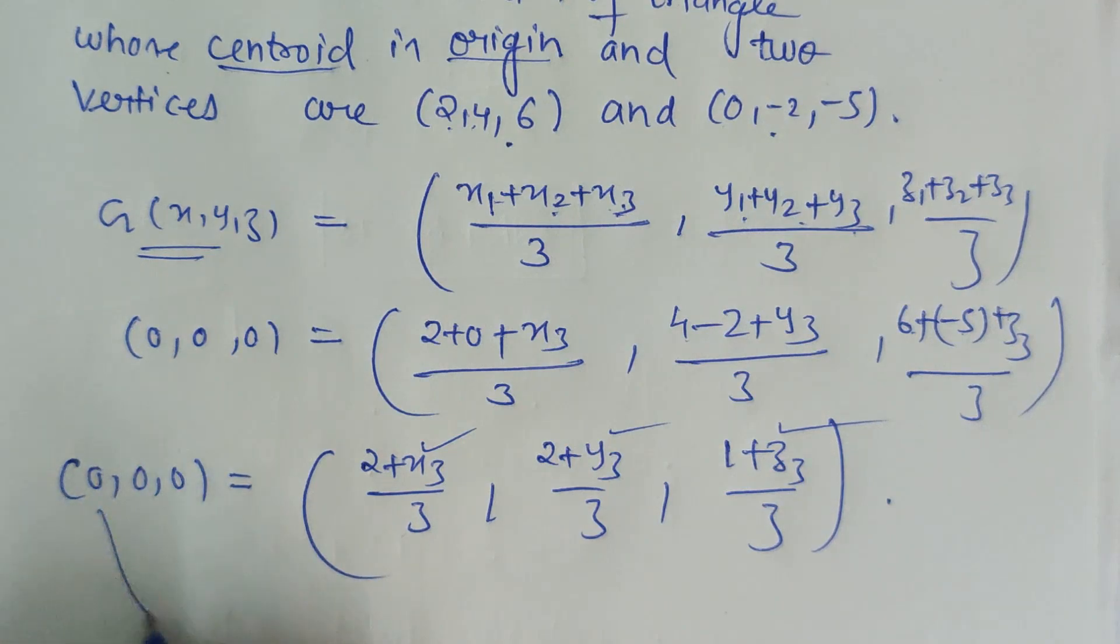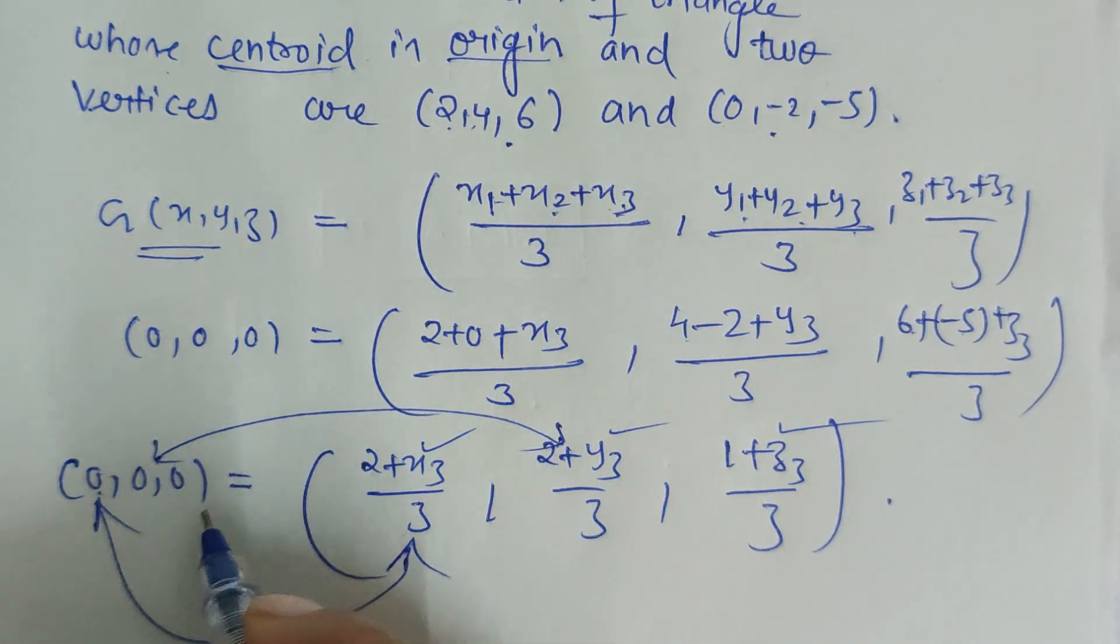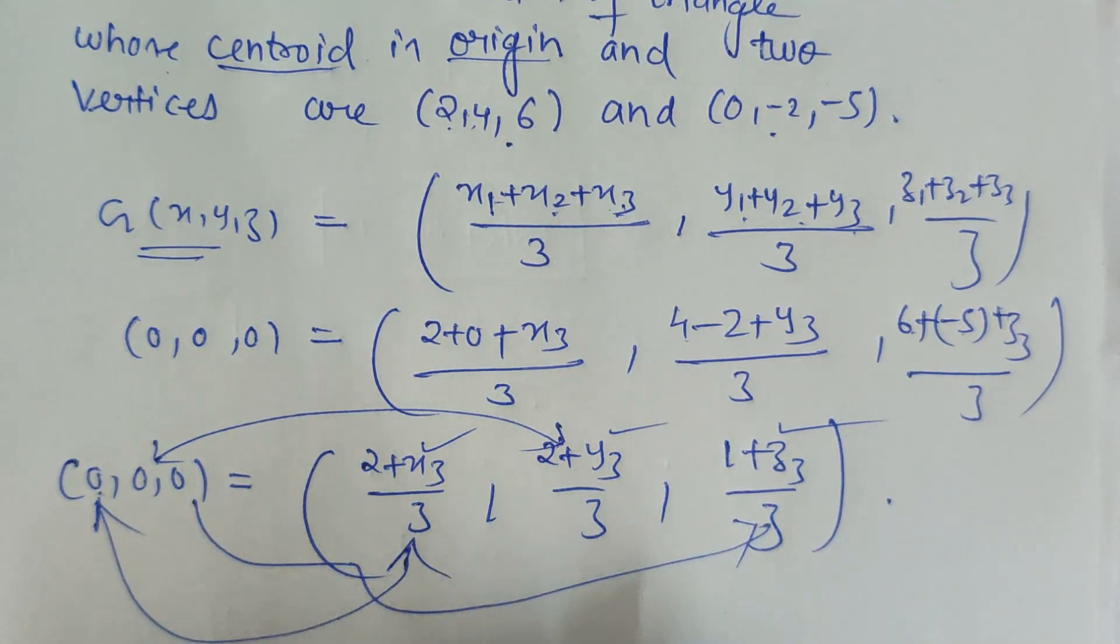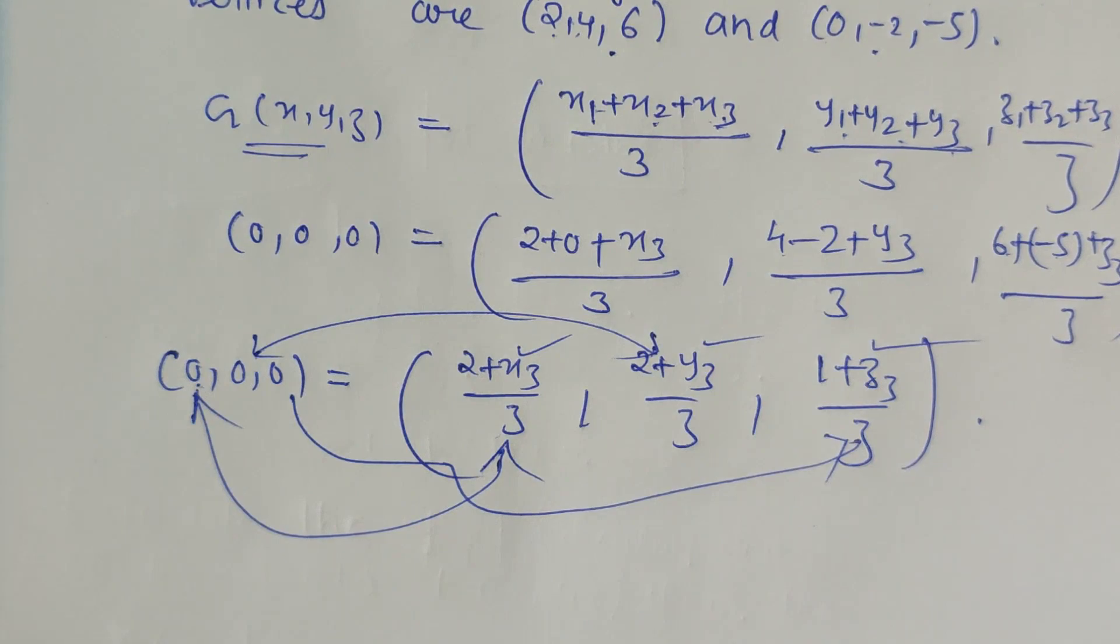Now to get x3, y3, z3, we just have to compare the coordinates: the first coordinate with the first coordinate on the right hand side, second with the second, and third with the third.